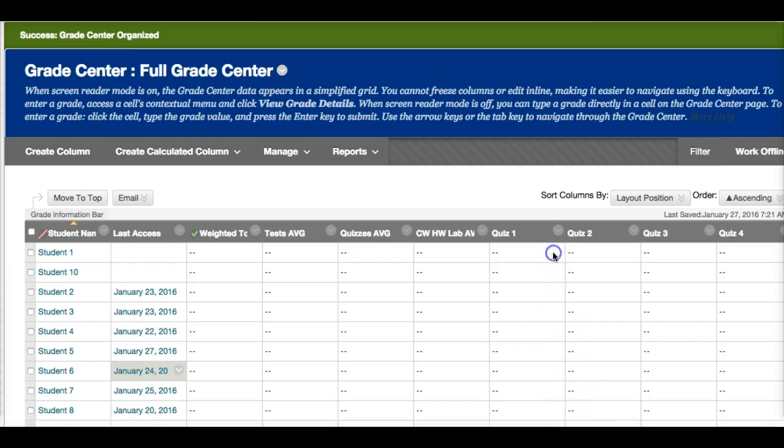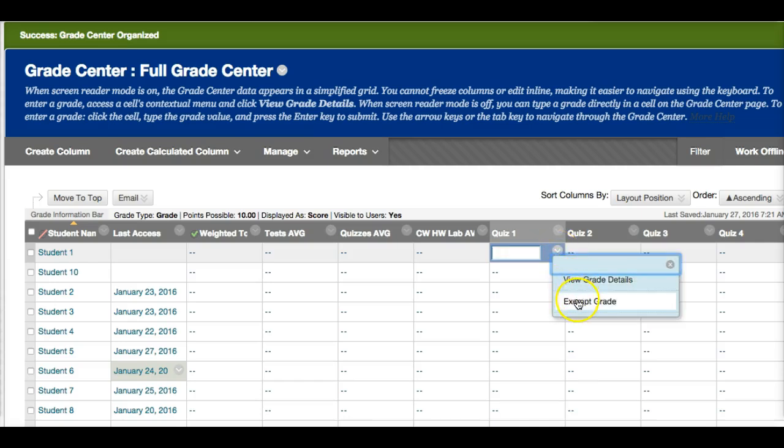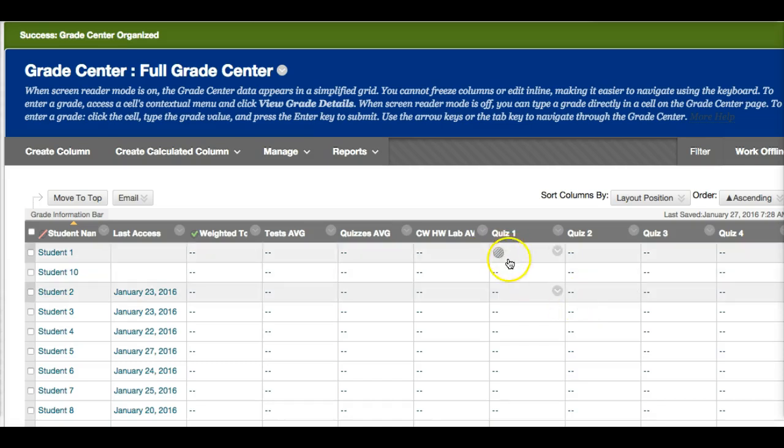So if you want to exempt a student from an assignment, you can click on the side arrow. And you can say exempt grade. And you'll get this circle.